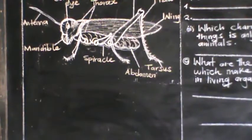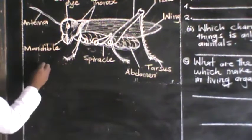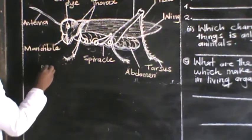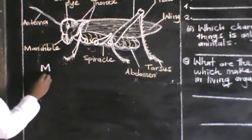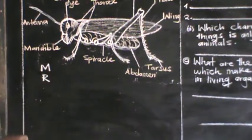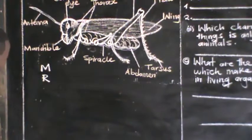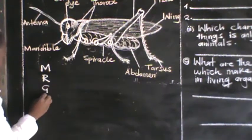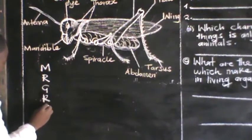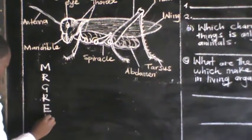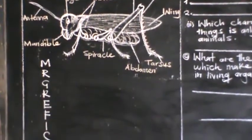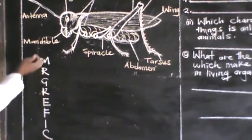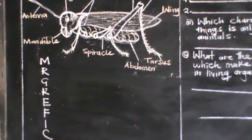So we can use a mnemonic to remember these characteristics. We call it MRGREFIC — this is what can help you to remember the characteristics of living organisms.